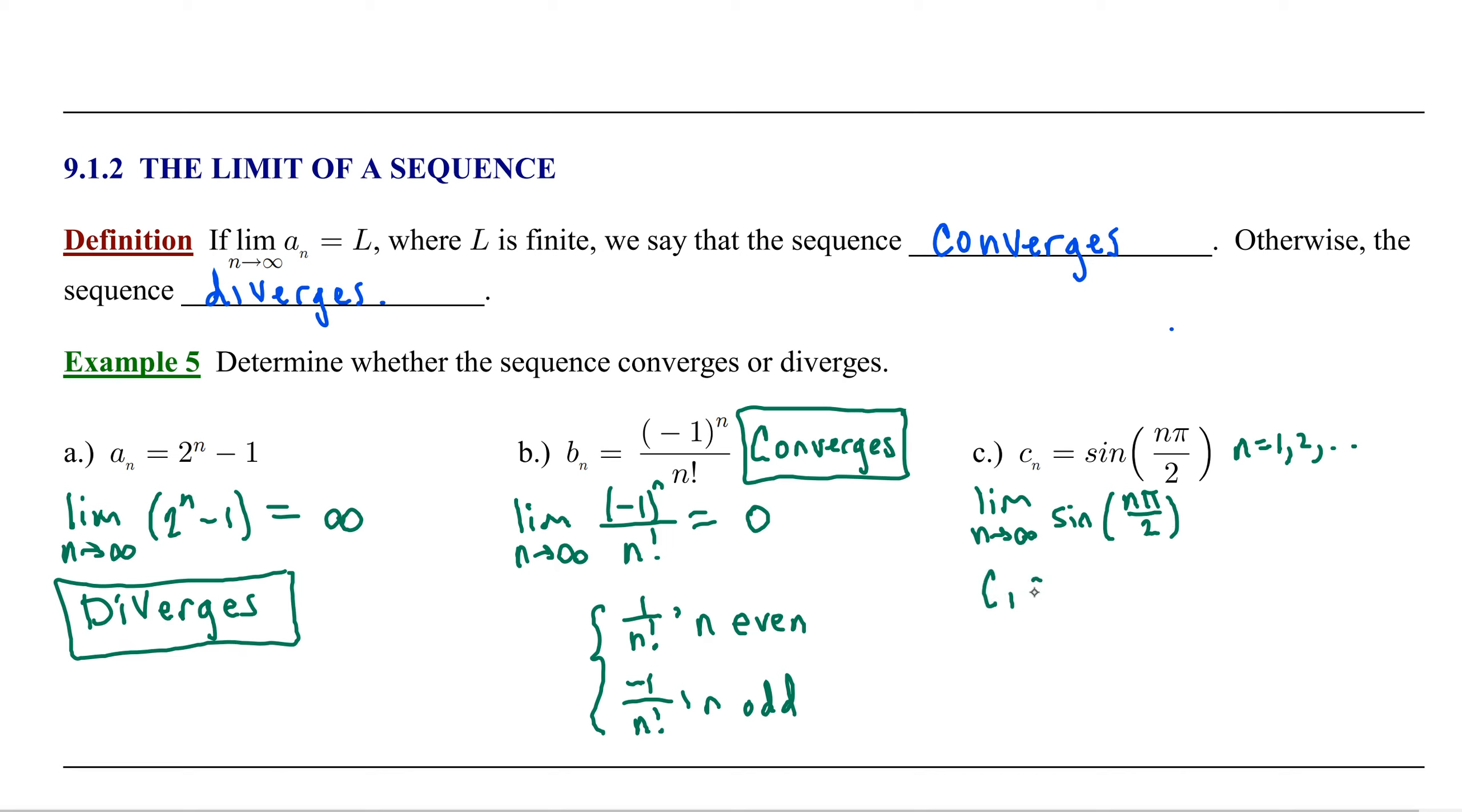So let's examine a couple of individual terms of this sequence. Notice if n is equal to 1, we end up with sine of pi over 2, which is 1. If n is equal to 2, we end up with sine of 2 pi over 2, or sine of pi, which is 0. For n equal to 3, we have sine of 3 pi over 2, which is negative 1.